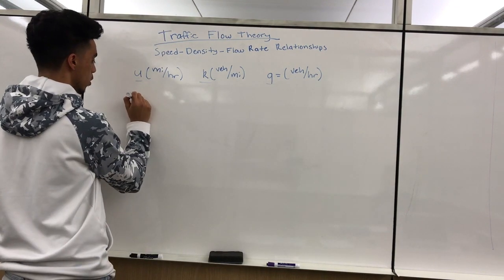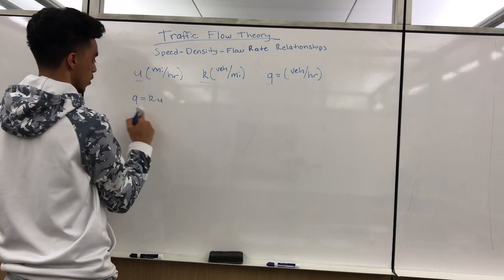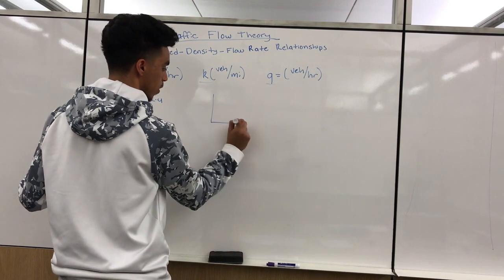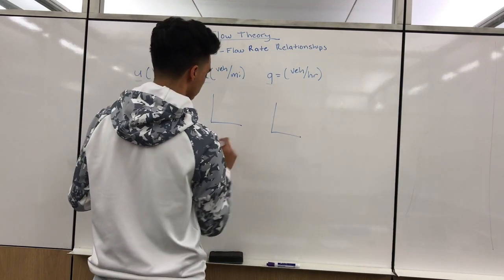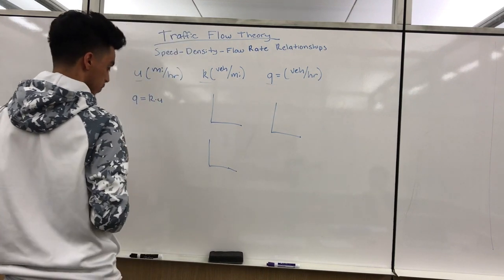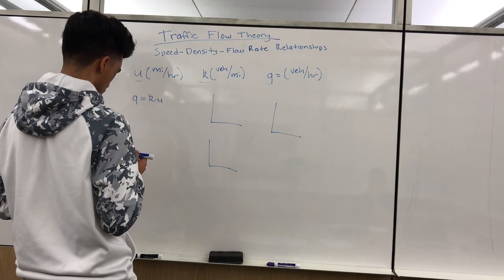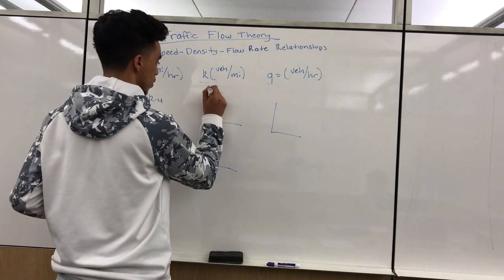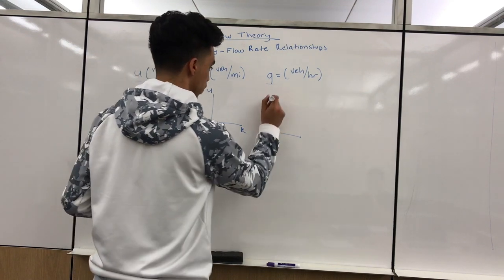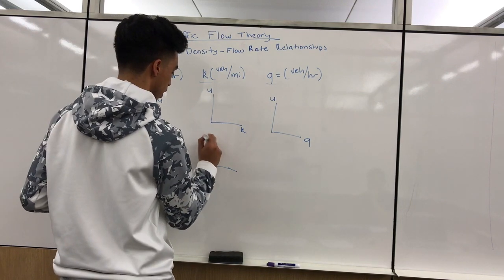The relationship that relates all these terms is the formula q equals k times u. There are also three graph relationships: speed versus density, speed versus flow rate, and flow rate versus density.